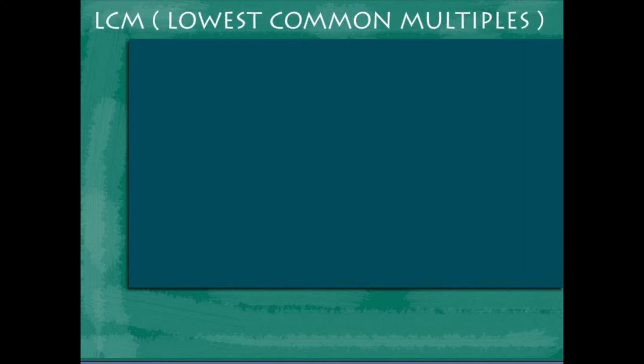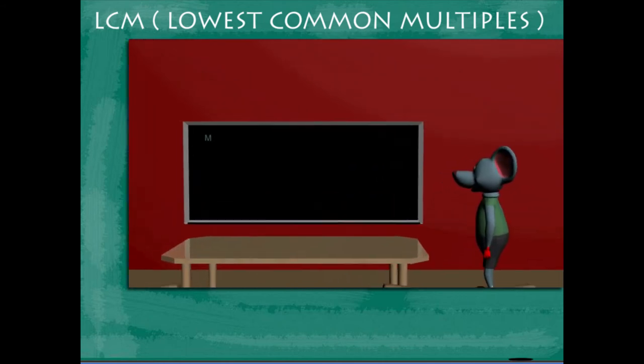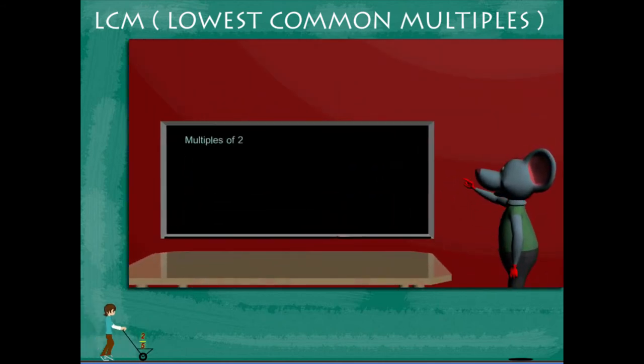LCM, lowest common multiples. Toby Mouse writes the multiples of two on the board: 2, 4, 6, 8, 10, 12, 14, 16. He then writes the multiples of six: 6 and 12.